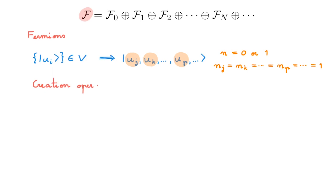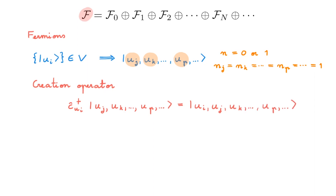The creation operator associated with single particle state ui is c†_ui and it is defined by its action on a general Fock state, giving a new Fock state. What this means is that the creation operator acts on a Fock state by adding a particle to state ui so that the occupation of that state goes from zero to one, and we add the state ui at the beginning of the list. For fermionic states the order in which the states appear is critical, so you must remember that in this definition we add the new occupied state at the beginning of the list.